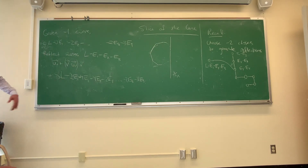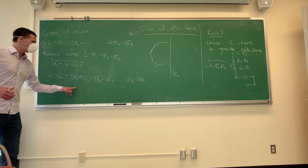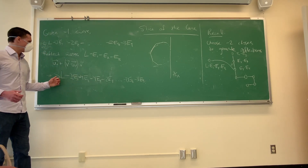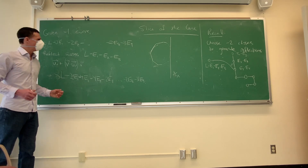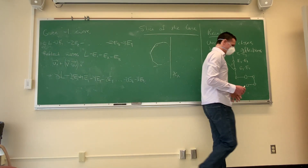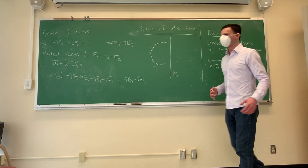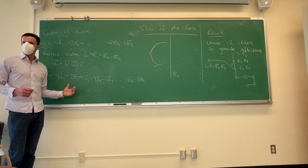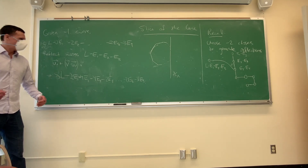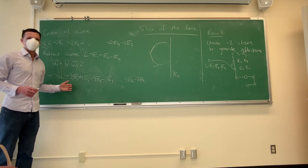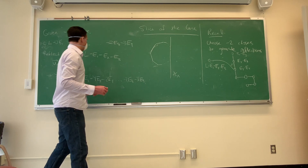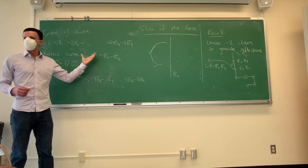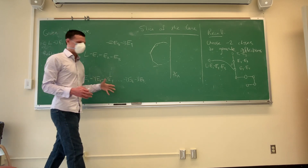You can continue this process forever: rearrange your coefficients so the mildest ones go in front, compare with the L-degree, reflect across L minus E₁ minus E₂ minus E₃, and you get a curve with higher L-degree. This happens at R equals 9 and not R equals 8 exactly because 9 is 3 squared — the canonical divisor is 3L minus all the Eᵢs, and this vector was chosen to pair to zero with kx. It all comes back to the canonical divisor.